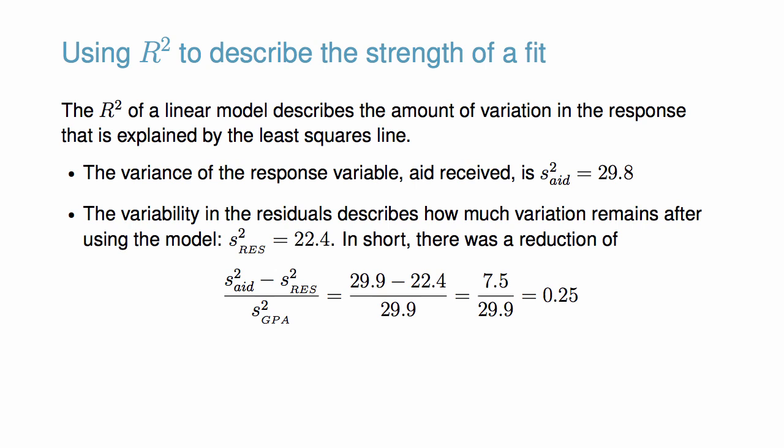In short, there was a reduction of 25% in the data's variation by using information about family income for predicting aid under the linear model. This corresponds to an R² value of 0.25.